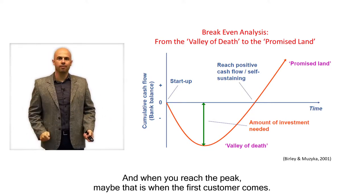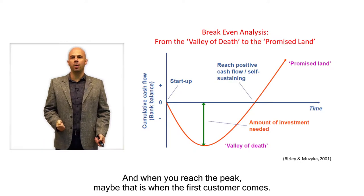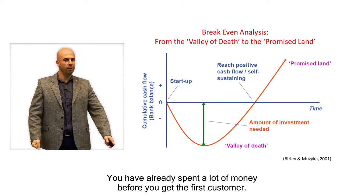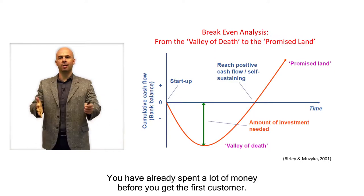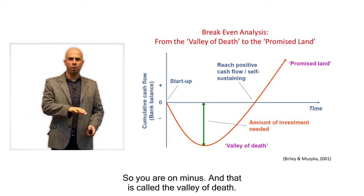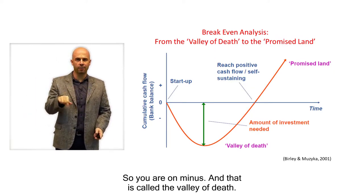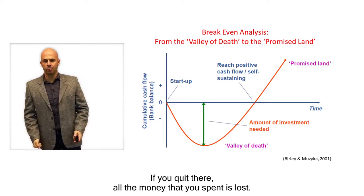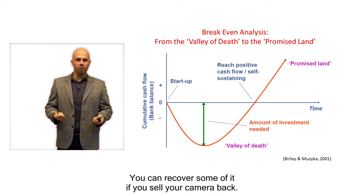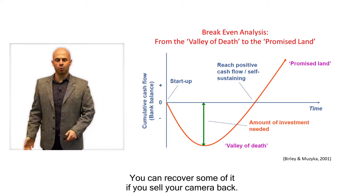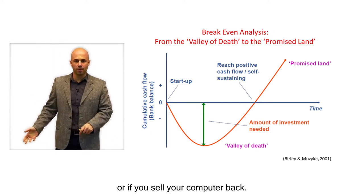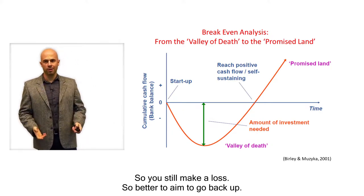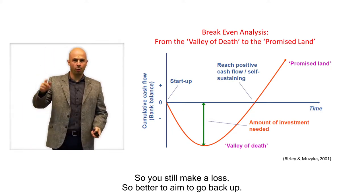When you reach the peak, maybe that is when your first customer comes. You have already spent a lot of money before you get that first customer, so you are in the minus. That is called the valley of death. If you quit there, all the money you spent is lost. You can recover some by selling your camera or computer back, but never at the price you bought them, so you will still make a loss. Better to aim to go back up.